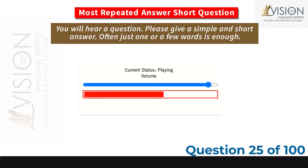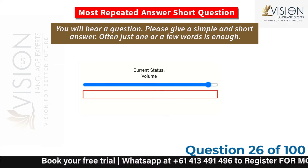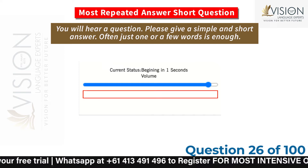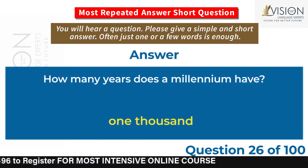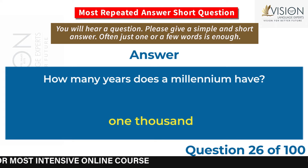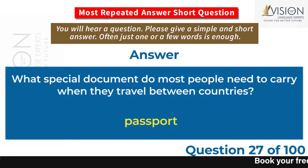What device is used to take photographs? A camera. How many years does a millennium have? 1,000. What special document do most people need to carry when they travel between countries? Passport.